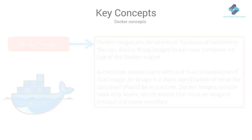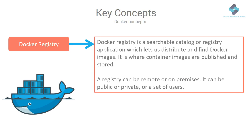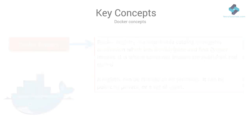Docker images contain read-only layers, which means that once an image is created it is never modified. A Docker registry is a searchable catalog or registry application which lets us distribute and find Docker images. A registry is a place where container images are published and stored. A registry can be remote or on-premises, public so everyone can use it, or private and restricted to an organization or set of users. A Docker registry comes with a set of common APIs that allow users to build, publish, search, download, and manage container images.